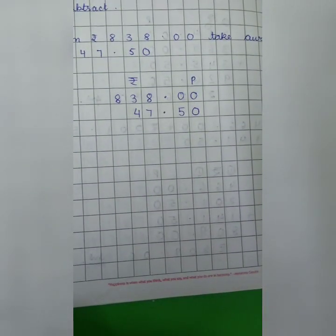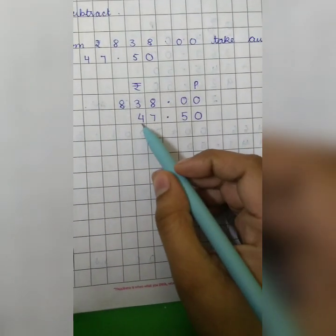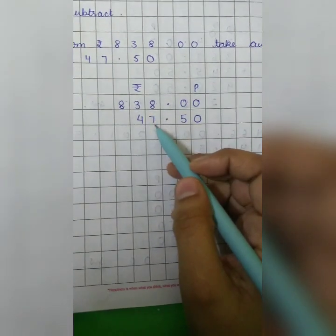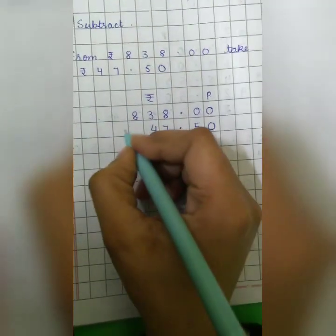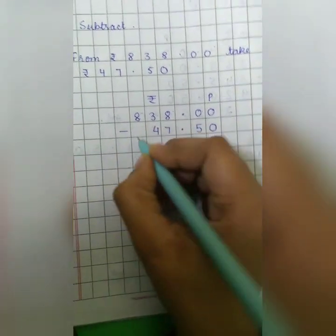You will write down 47 under proper place. 7 under 1's place. 4 under 10's place. And then take away means subtraction. Right?